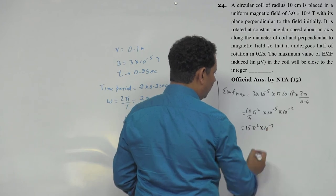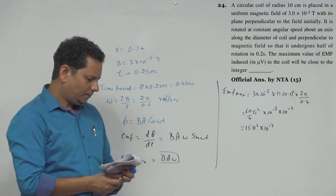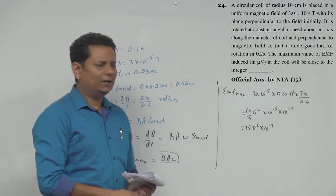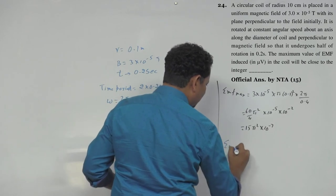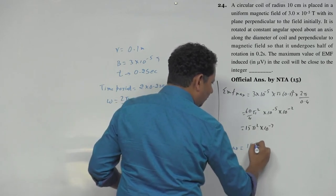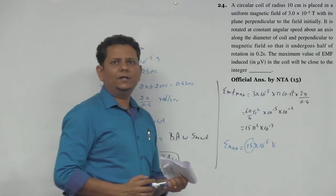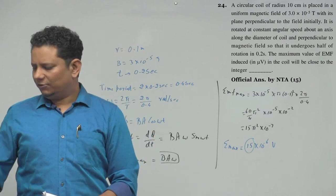This is your value. So if we calculate this, pi square is almost 10, so this means your maximum emf E max will be equal to 15 into 10 to the power minus 6 volt, that is 15 is the nearest integer, and that would be our final answer for this problem.